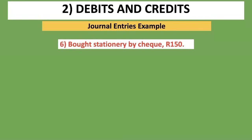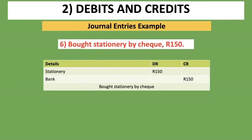Transaction six: bought stationery by check, 150 rand. We paid by check, so Bank is the first account. Stationery is an expense account, just like telephone, so it is the second account. We debit Stationery because it's an expense that is increasing, and we credit Bank because it's an asset that is decreasing. Journal entry: Debit Stationery 150 rand, Credit Bank 150 rand. Narration: bought stationery by check.